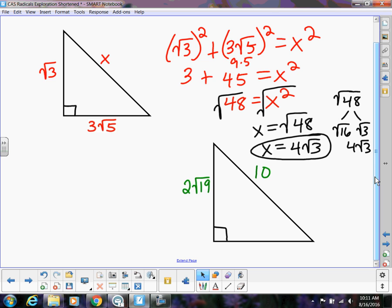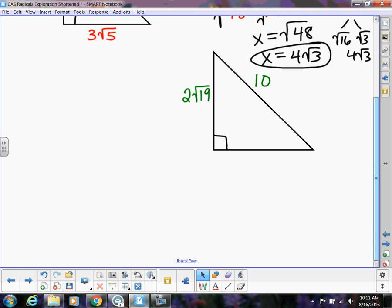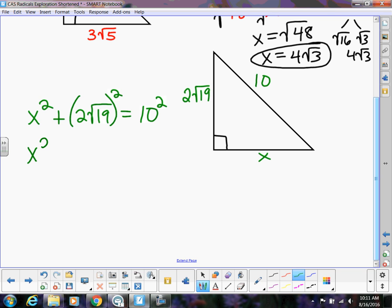Okay so let's do one more example. So this triangle right here, now we're trying to find the leg. So I would have x squared plus 2 square root of 19 squared equals 10 squared. So I have x squared plus this is going to be 4 times 19 which is going to give me 76, and this is 100. So if I subtract the 76 I'm going to get 24.